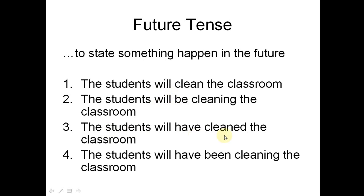Number three, future perfect: 'The students will have cleaned the classroom.' The characteristic of perfect is that something will have been completed. 'Will have cleaned' expresses certainty that by a future point, the students will definitely have finished cleaning the classroom. For example, the teacher, before entering the classroom, says: 'I'm sure the students will have cleaned the classroom' — she believes the room will already be clean by the time she arrives.